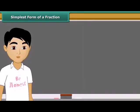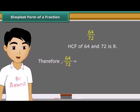Students, a second method to find the equivalent fraction in the simplest form is to find the HCF of the numerator and denominator, and then divide both of them by the HCF. Consider fraction 64 upon 72. The HCF of 64 and 72 is 8. We get new fraction 8 upon 9 on dividing the numerator and denominator both by HCF.